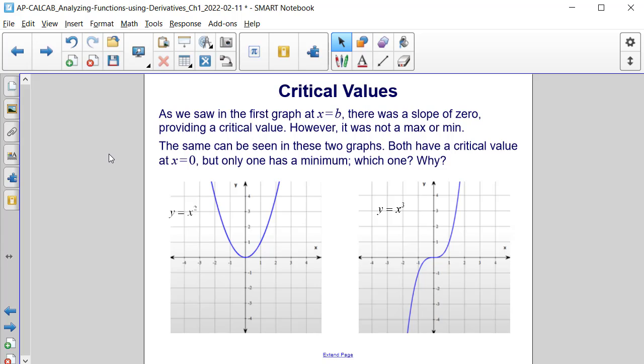As we saw in the first graph at x equals b, there was a slope of 0, which provided us with a critical value. However, it was not a max or a min. The same can be seen in these two graphs.